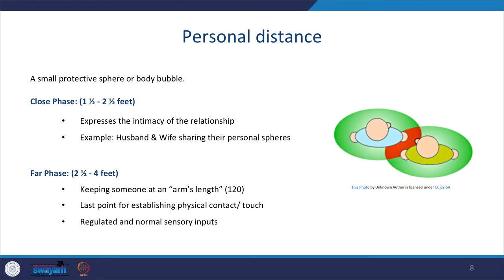Personal distance is a very small protective sphere where you cannot restrict yourself from a sort of body bubble. The close phase is 1.5 to 2.5 feet and expresses the intimacy of a relationship — that is why proxemics is also called relationship communication. For example, a couple maintaining a certain distance with each other falls under personal space. When it is close, the other person is kept at arm's length, and physical contact is not desired.